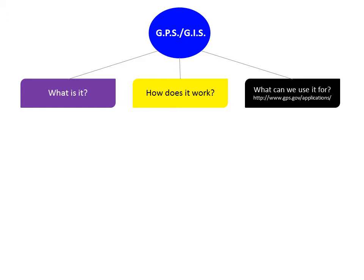The first subtopic, 'What is it?' I chose purple because it's kind of a history section in a way, and whenever I think of history I think of royalty and I think of purple. For 'How does it work?' I chose yellow, because I think of it as a light bulb that goes off in your mind when you understand how something works.